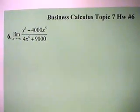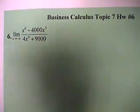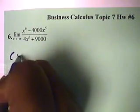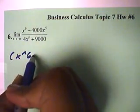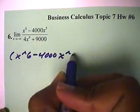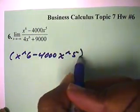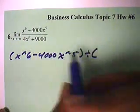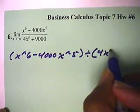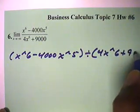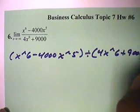We want to numerically calculate the limit of this problem. So we're going to put this in the calculator, this function right here, as open parentheses x to the 6 minus 4,000 x to the 5, close parenthesis, then division, open parenthesis for the denominator, x to the 6 plus 9,000, close parenthesis.